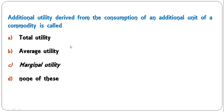Next: 'Additional utility derived from the consumption of an additional unit of a commodity is called' — total utility, average utility, marginal utility, or none of the above? This is marginal utility — additional utility derived from additional consumption is known as marginal utility. C is the correct answer.